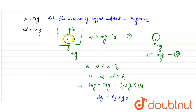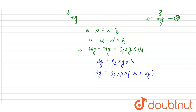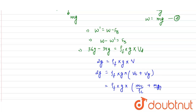Since the ornament displaces water equal to its own volume, the volume of fluid displaced equals the volume of the ornament. The volume of the ornament equals the volume of copper plus the volume of gold. So: density of fluid × g × (mass of copper / density of copper + mass of gold / density of gold).